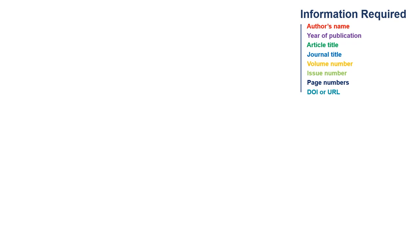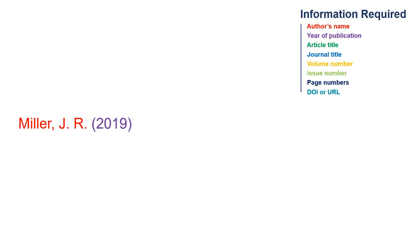Begin with the author's last name, comma, and initials. Follow each initial with a period. The year of publication is added next, in parentheses, and followed by a period.